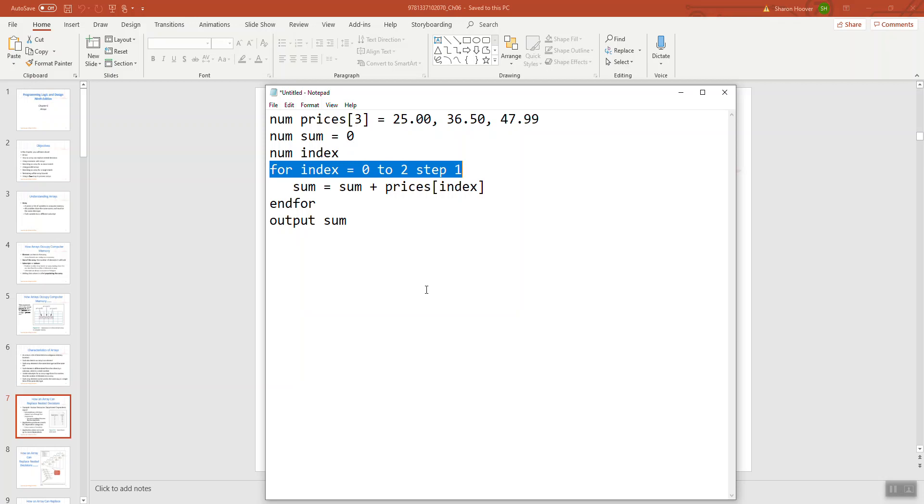That's exactly what we need to be able to point to the first, second, and third items in our array. So what we can do is build an assignment statement that says set sum equal to the existing sum. We're starting sum at 0. So the first time through this says set sum equal to 0 plus the first time through index will be 0. So this array access expression will evaluate to prices sub 0, which will access 25 dollars. So the assignment statement will say set sum equal to 0 plus 25.